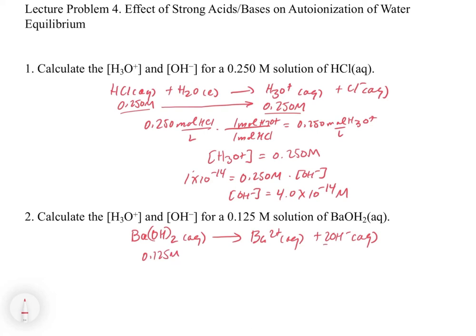So if we have 0.125 moles per liter of barium hydroxide, we have to be careful here. Because for every one mole of barium hydroxide, there are two moles of OH- that go into solution. So really, this gives us a concentration of 0.250 molar for our concentration of OH-.